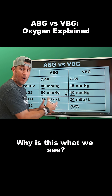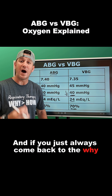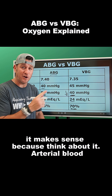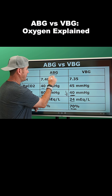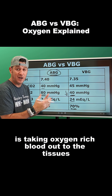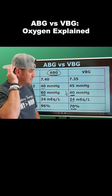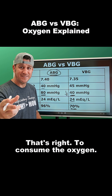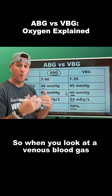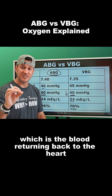Why is this what we see? If you just always come back to the why, it makes sense. Think about it — arterial blood is taking oxygen-rich blood out to the tissues for the tissues to do what? That's right, to consume the oxygen. So when you look at a venous blood gas, which is the blood returning back to the heart after oxygen consumption...